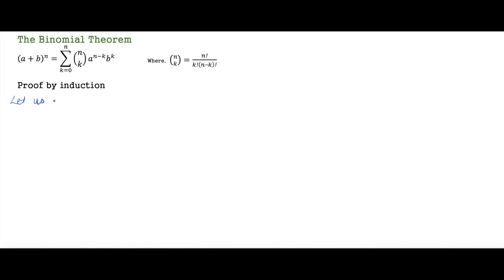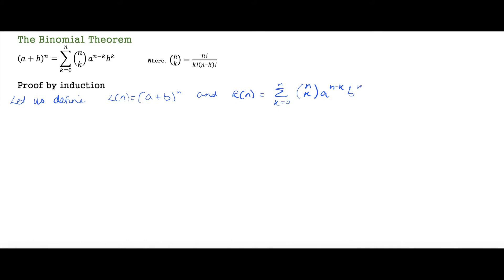Let us define the left-hand side and right-hand side. L_n equals (a + b) to the power of n, and R_n equals the sum from k equals 0 to n of n-choose-k times a to the power of (n minus k) times b to the power of k. Of course, n-choose-k is defined in the standard way.